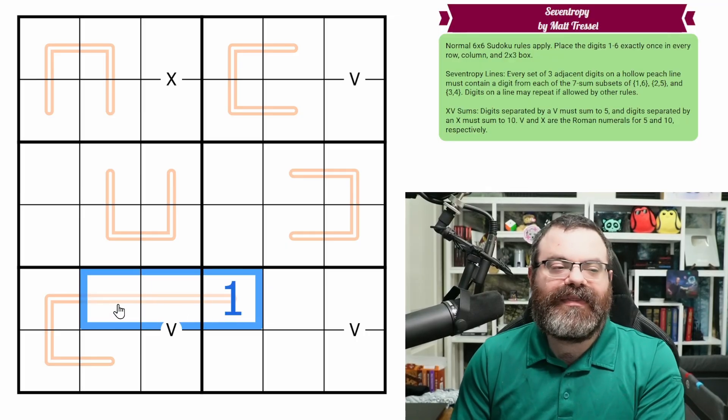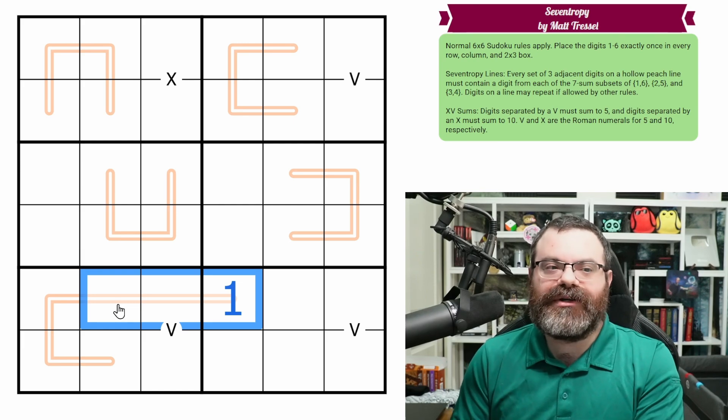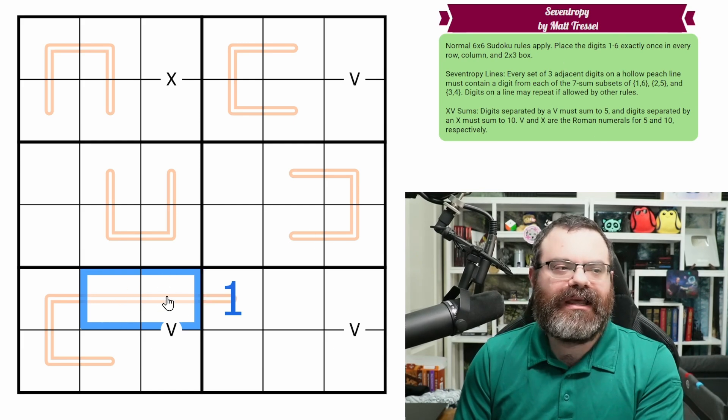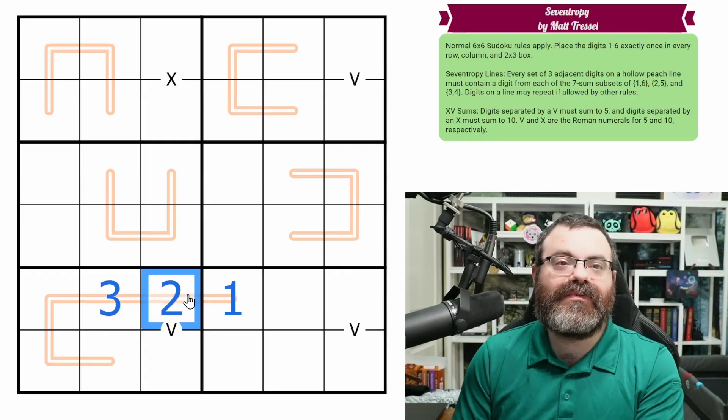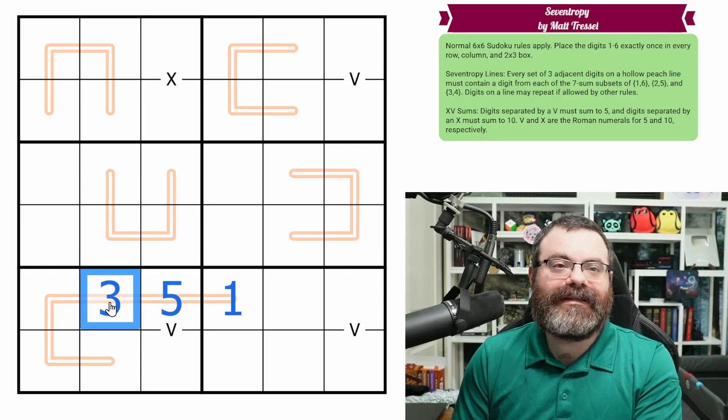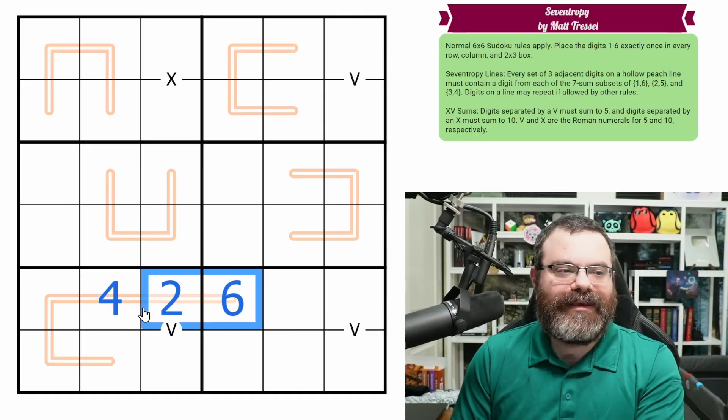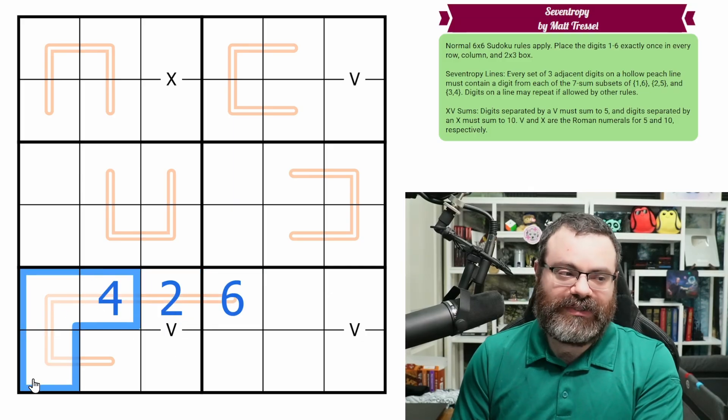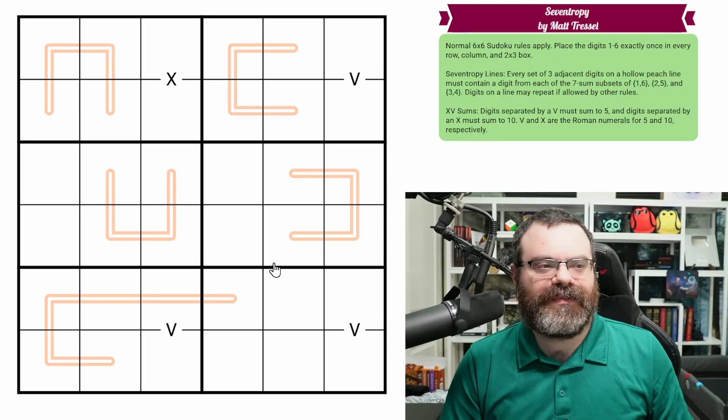So for example, if I put a 1 here, then this group of 3 can't have another 1 or 6, because we need to fulfill the other 2 groups. So I could do 1, 2, and 3, those are 3 of our groups. Or I could do 1, 5, and 4, or I could even do 6, 5, and 4, or 6, 2, and 4, right? But I need 1 of each from the groups. All right, so those are the 7 trippy lines.